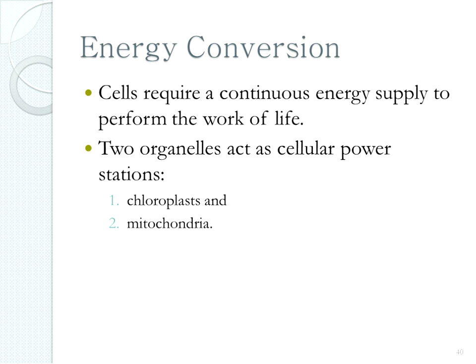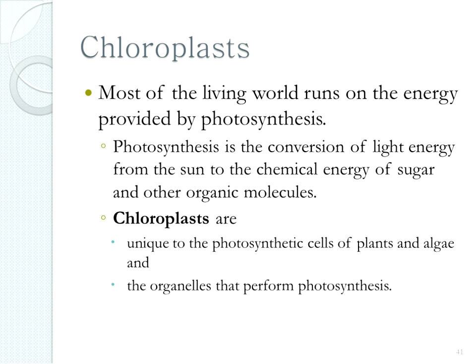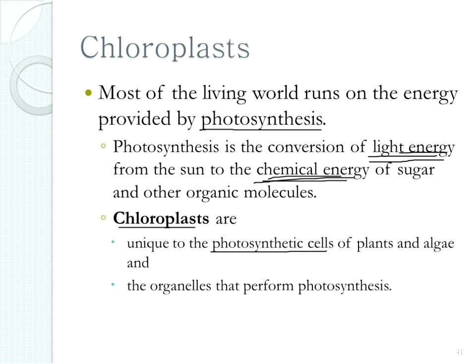There are a couple of organelles that work on energy conversion: chloroplasts and mitochondria. Chloroplasts convert light energy from the sun to chemical energy — plants can do this through photosynthesis, but animals cannot just sit in sunshine when hungry. We eat a plant or an animal that ate a plant, take that food energy, and convert it into ATP — the kind of energy our cells use for cell work. Chloroplasts are unique to photosynthetic cells and perform photosynthesis, which converts light energy to food energy.